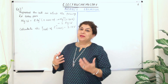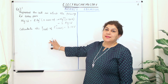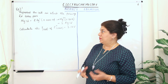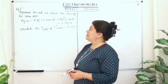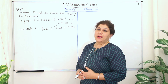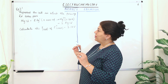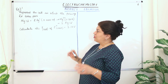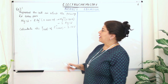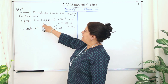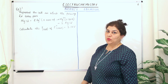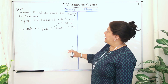Not wasting any time, let us come straight to it. This is solved example 3.1 from your textbook. The question is: represent the cell in which the following reaction takes place. The chemical reaction is given — magnesium reacts with 2 moles of silver ions, and the concentration of that silver salt is 0.0001 moles per liter.